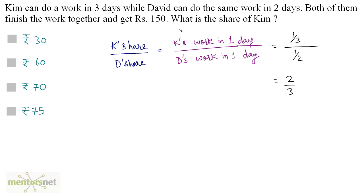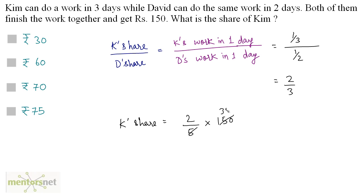Now we need to find what share of Rs 150 Kim gets. Kim gets 2 parts out of 2 plus 3, which is 5. So Kim gets 2/5 of Rs 150, which equals Rs 60.